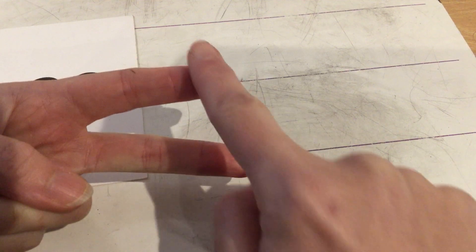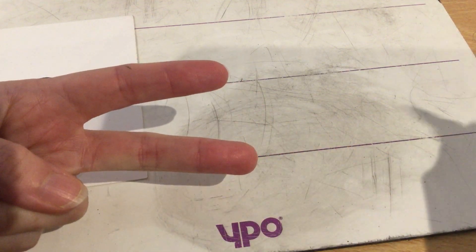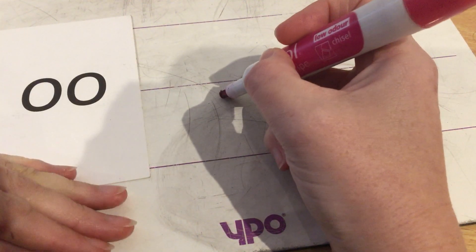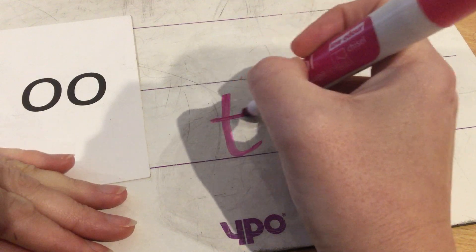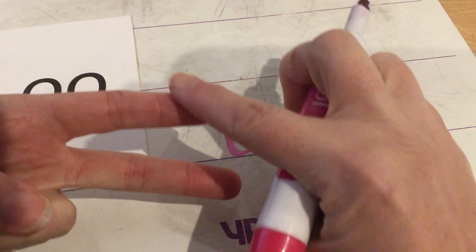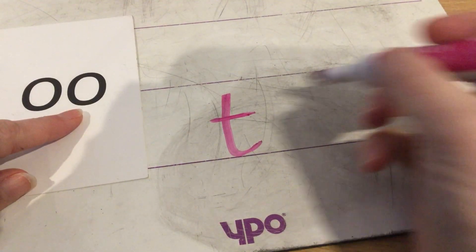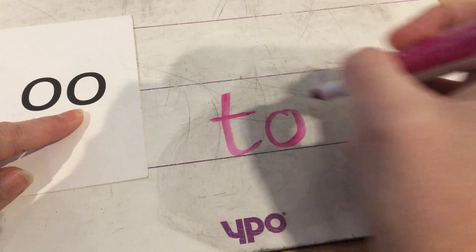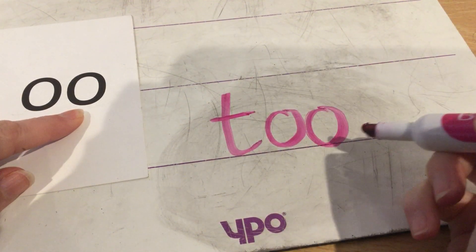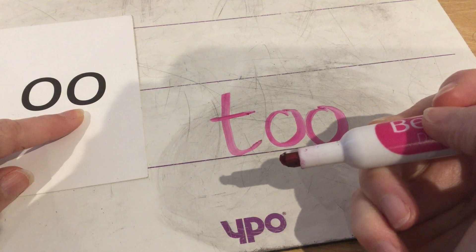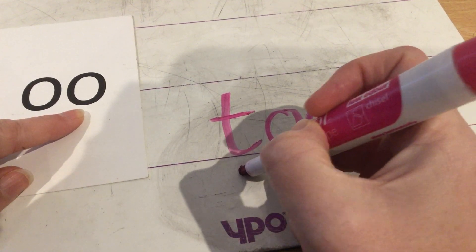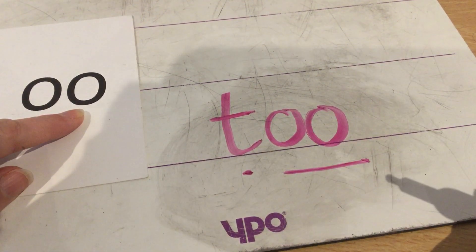T-oo. This one's nice and easy, that first sound. Down the tower and across the tower. T. Here it is. An O and an O. Can you put your dots and dashes? T-oo. Too.